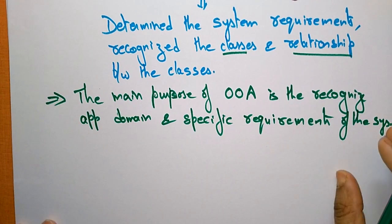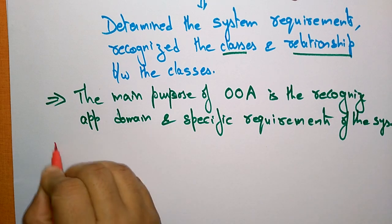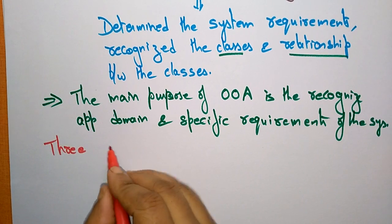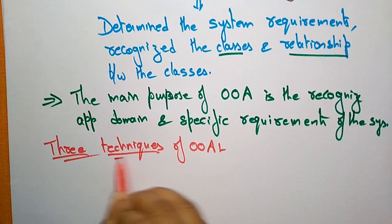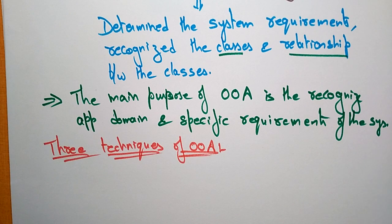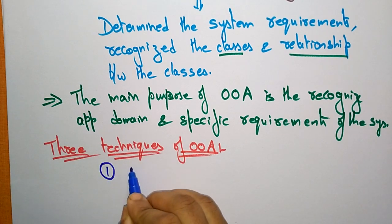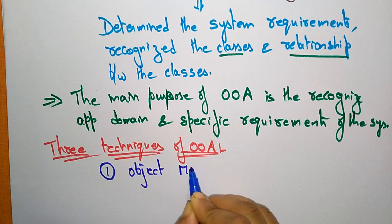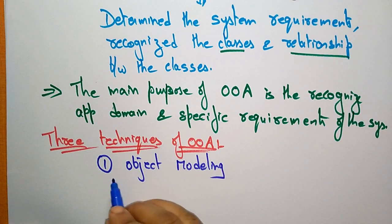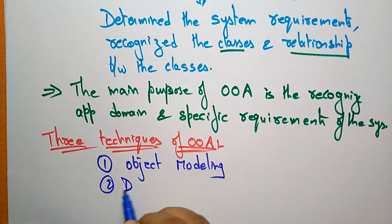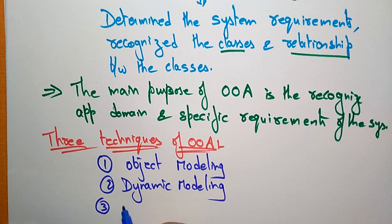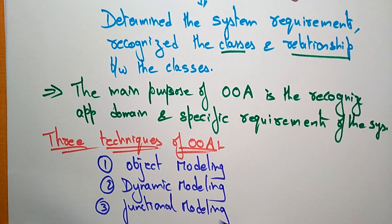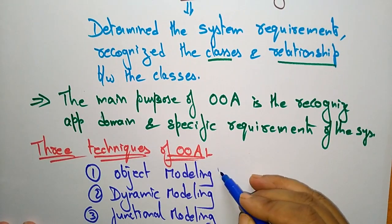Now let us see the techniques of Object Oriented Analysis. There are mainly three techniques: the first is Object Modeling, the second is Dynamic Modeling, and the third is Functional Modeling. These are the three techniques of Object Oriented Analysis.